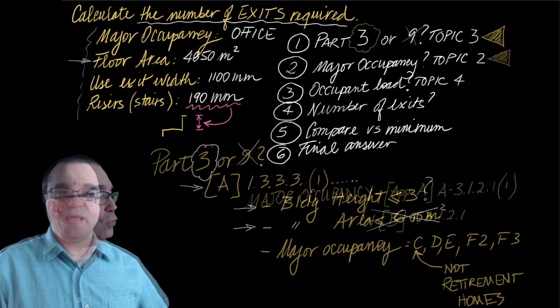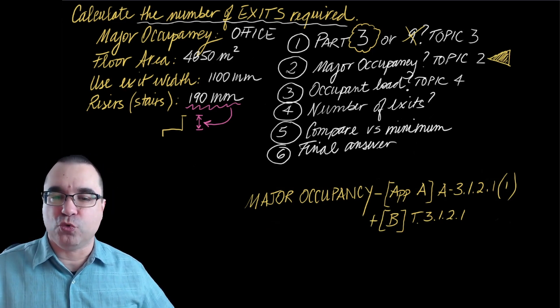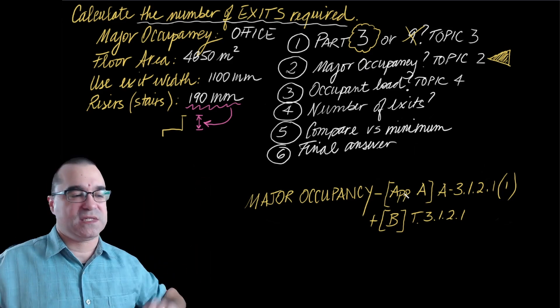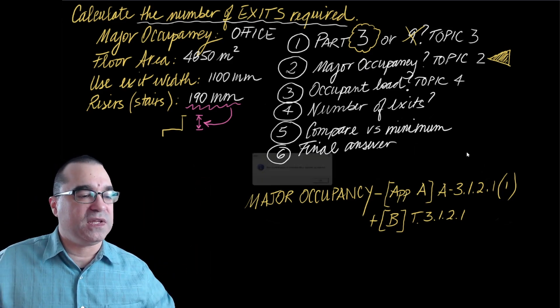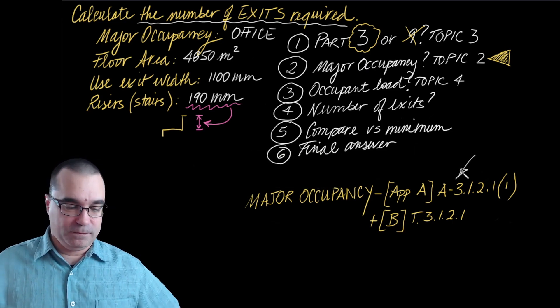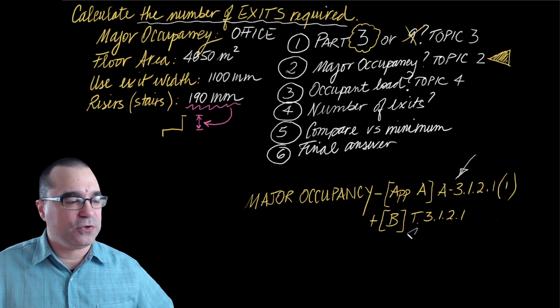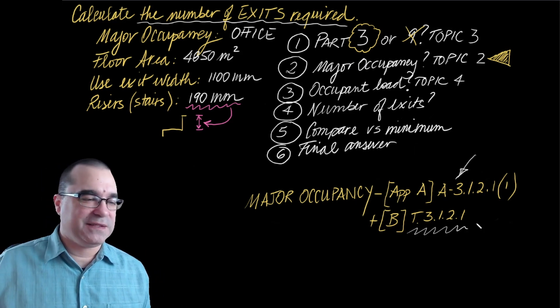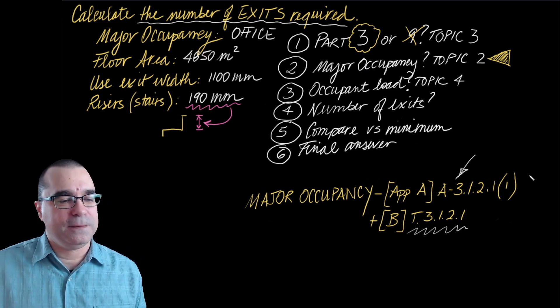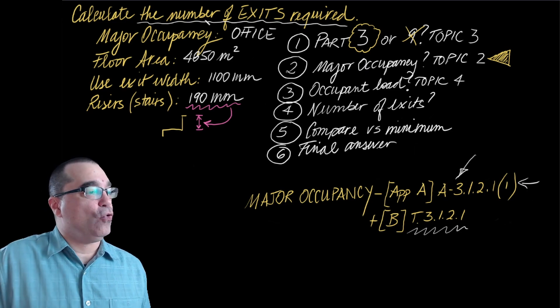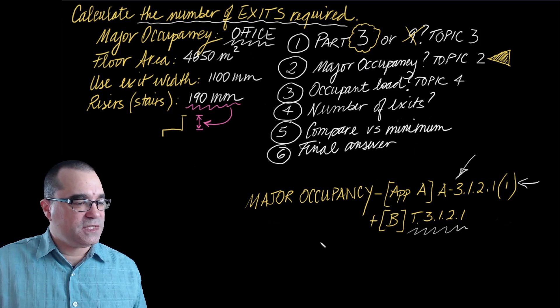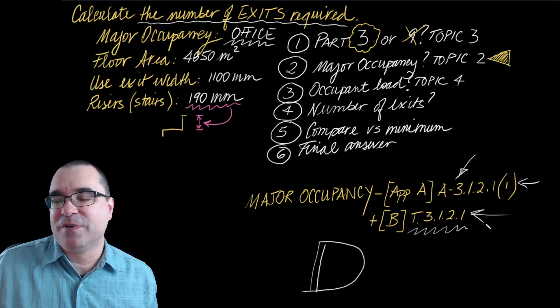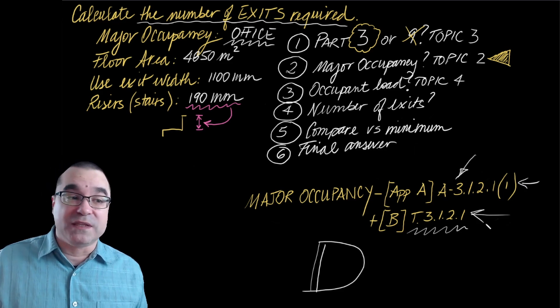We can now move on to step number two. Under step number two, we're going to use what we learned in topic two to identify the major occupancy for this building. Start with appendix A to identify what the group and division as necessary is for this building, and then go to table 3.1.2.1 to find out what the name of that major occupancy is. So I went to appendix A under sentence 3.1.2.1, and I found that for an office building, the major occupancy is D. And then when I go to table 3.1.2.1, I find that the name of that major occupancy is business and personal services. Great. We're done with step two.